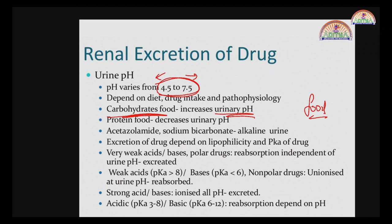Lactic acid and pyruvic acid can undergo other pathways to produce bases, increasing urinary pH. Proteins are metabolized into amino acids, which being acidic in nature will reduce the urinary pH. Certain drugs like sodium bicarbonate or acetazolamide also cause alkalinization of urine pH. The universal thumb rule is: like dissolves in like. An acidic drug will be dissolved in an acidic medium; a basic drug in a basic medium. Unionized drugs are absorbed, whereas ionized drugs are not absorbed.